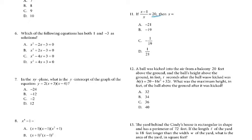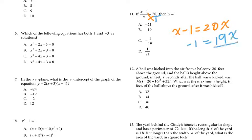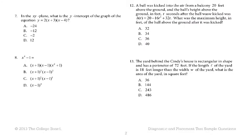For number 11, use cross-multiplication or plug in to check answers. Cross-multiplying is the easier method: (x minus 1) times 1 equals 20x. This is linear, so isolate x: subtract x from both sides to get 19x, then divide by 19 on both sides. The answer is negative 1 over 19.